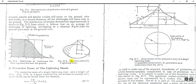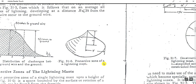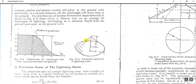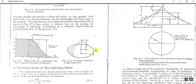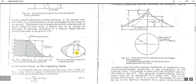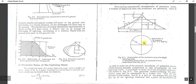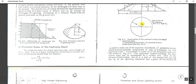This is the direct stroke lightning protection system using a single lightning mast. This shows the protection zone of a single lightning mast, where small h is the height of the lightning mast and r is the radius of the zone of protection area.